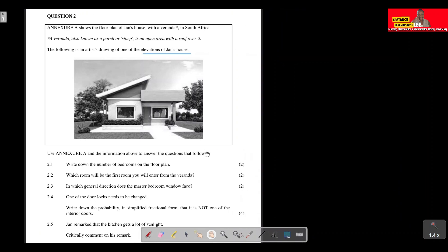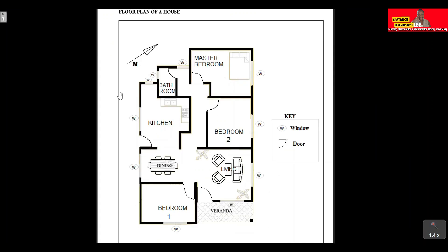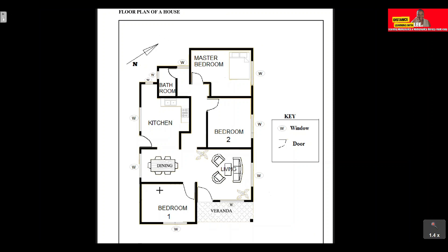Let's look at the floor plan on Annex A to determine how many bedrooms there are. We're given a compass to help us determine direction. The north direction is indicated on the plan. Remember the mnemonic: Naughty Elephant Sprays Water — you move clockwise to determine east, south, and west once you've identified north.